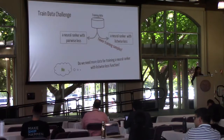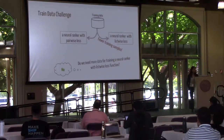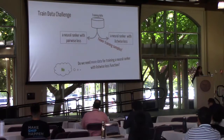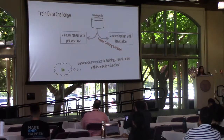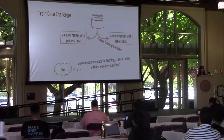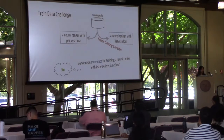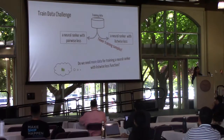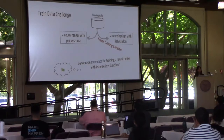Why is that? One reason is about training data. During training, a neural model that optimizes the list-wise loss function ends up having fewer training samples than one that optimizes the pair-wise or point-wise loss function.